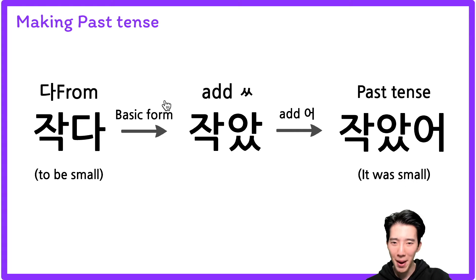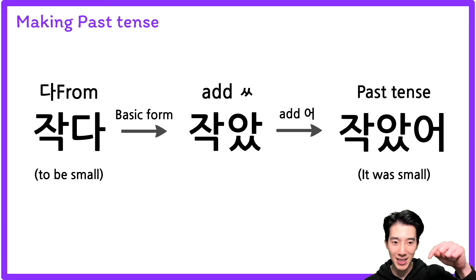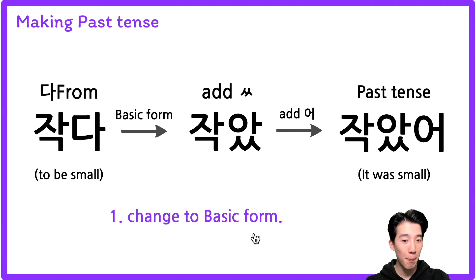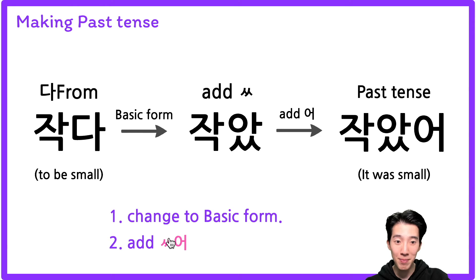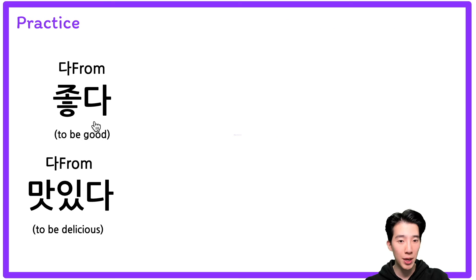작았어 — yes, this is the past tense. If you know how to make the basic form, making past tense is much easier. So if you still didn't check the basic form, please check right now. 작았어 is past tense. The steps are: first, change to the basic form; second, add 받침; then add 어. Let's practice more — first 좋다 which is 'to be good,' and 맛있다 which is 'to be delicious.'